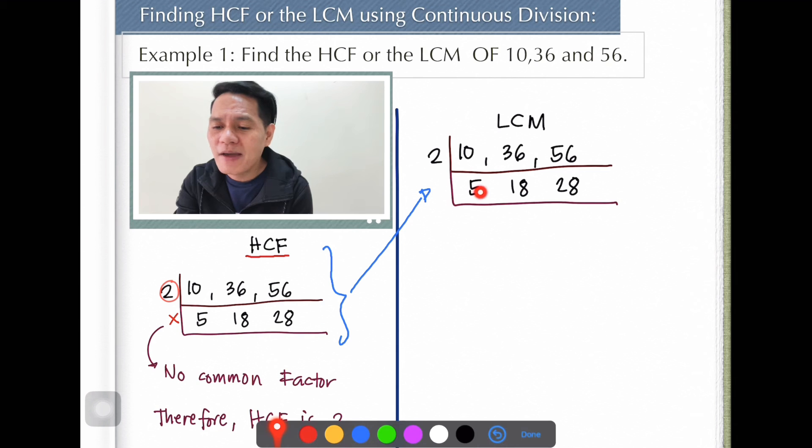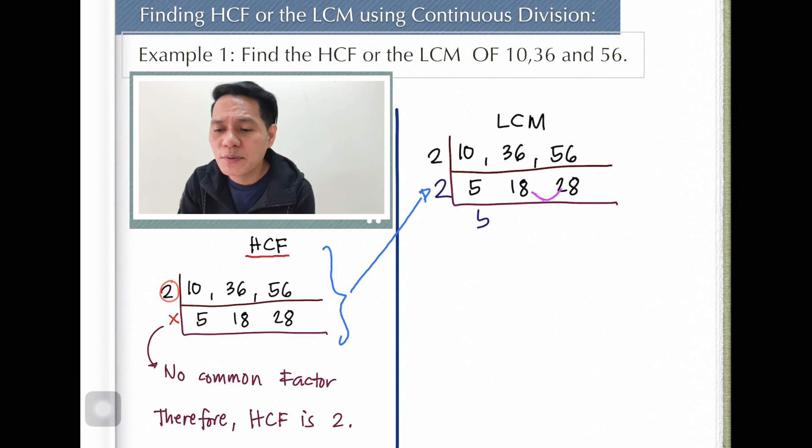For example, 5 and 18, they don't have common. 18 and 28 has common, right? They have common factors. 18 and 28 have common factors. What do you think are the common factors of 18 and 28? So start with 2. We can still break it down. So there you go. You have 2.